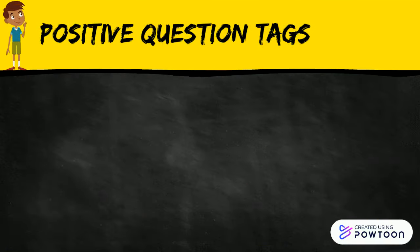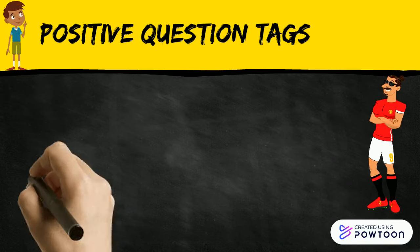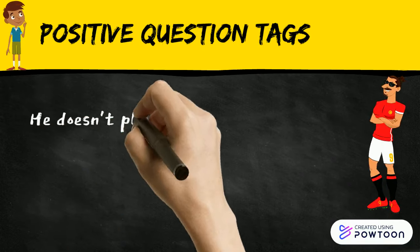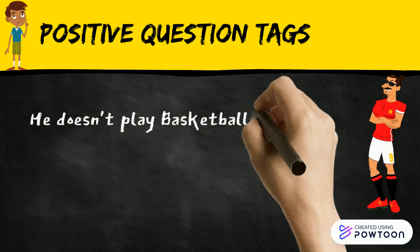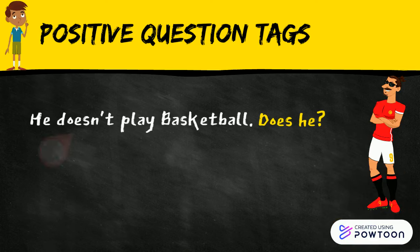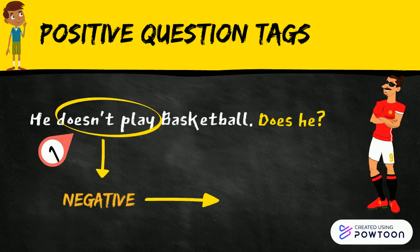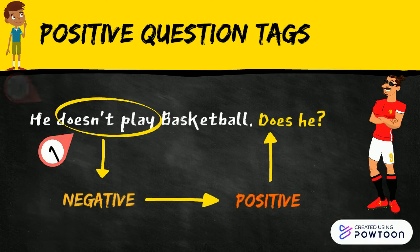When the sentence has another regular verb, we use 'do' or 'does' to make positive tag questions about the present. An example is: 'He doesn't play basketball, does he?'